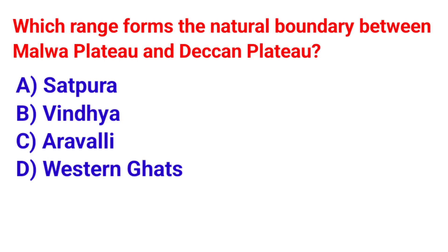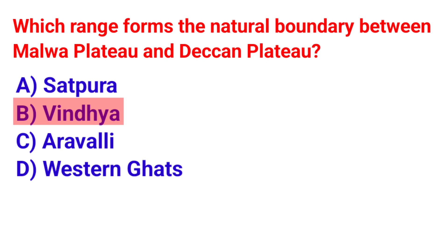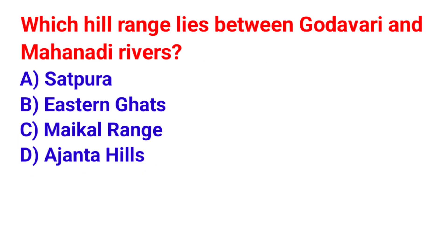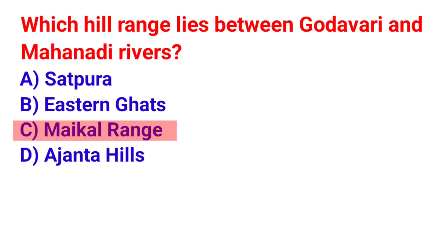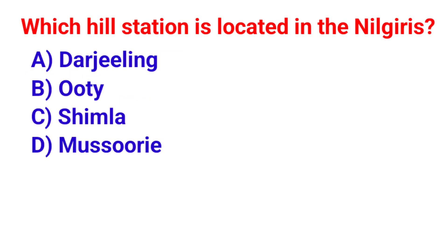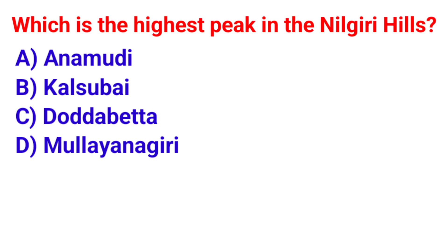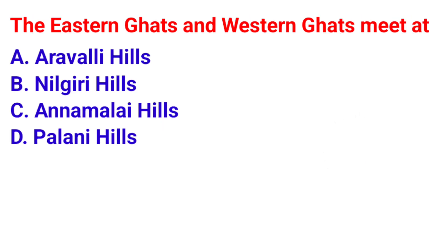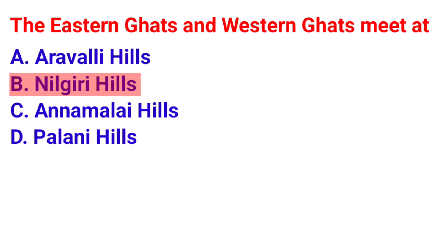Question 23: Which range forms the natural boundary between Malwa Plateau and Deccan Plateau? The answer is option B — Vindhya. Question 24: Which hill range lies between Godavari and Mahanadi rivers? The answer is option C — Maikal Range. Question 25: Which hill station is located in the Nilgiris? The answer is option B — Ooty. Question 26: Which is the highest peak in the Nilgiris hills? The answer is option C — Doddabetta. Question 27: The Eastern Ghats and Western Ghats meet at? The answer is option B — Nilgiris Hills.